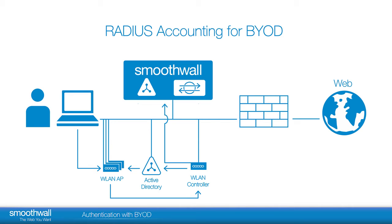Once access is granted, the wireless controller should be configured to send a message to the Smoothwall. The Smoothwall can then apply the appropriate filtering and rules to the user based on group membership, or on the default group if none have been specifically set for that user. The user may now access the internet.